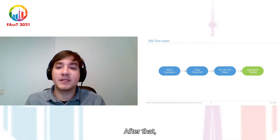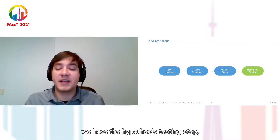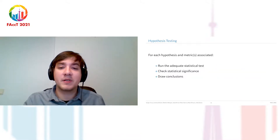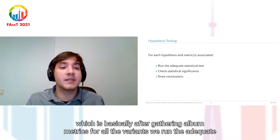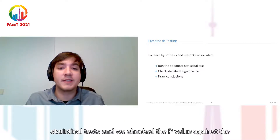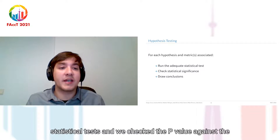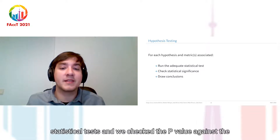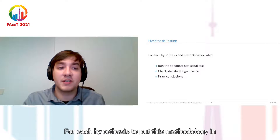After that, we have the hypothesis testing step: after gathering all the metrics for all the variants, we run the adequate statistical tests and check the p-value against the significance level to draw our conclusions for each hypothesis.